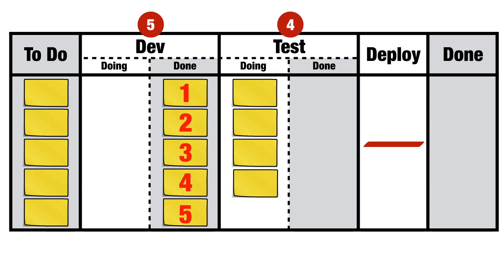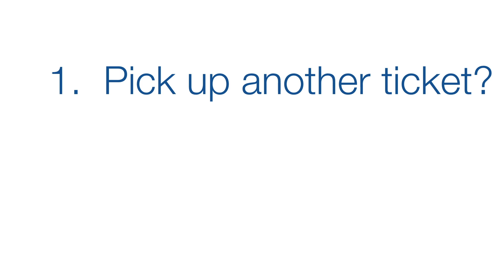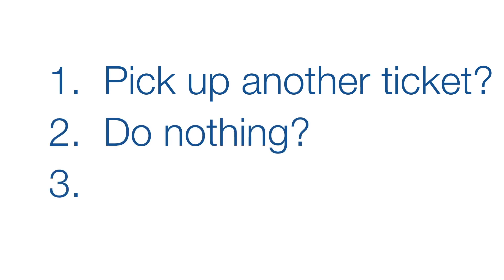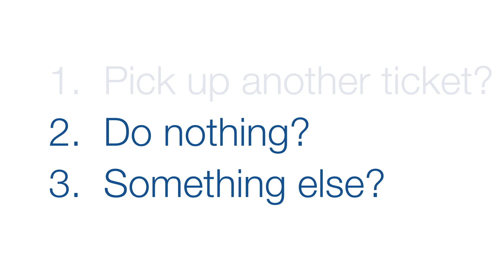Let's throw a little spanner in the works. Develop is at capacity, and all of that capacity is in the grey — the entire dev team is stuck, blocked. This might indicate that it's time to beef up the QA/test team, and if this situation crops up regularly, that's probably a good idea. But right here, right now, we have a problem and we need a solution. Question for you: what should the dev team do? Option one: pick up another ticket. Option two: do nothing. Option three: do something else. The WIP limit rules out option one, and that's entirely by design.